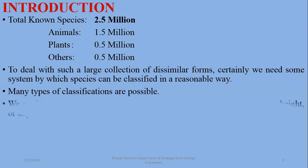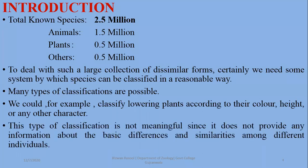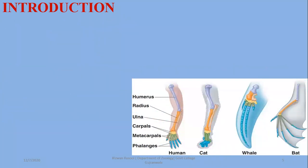Different types of classification exist. For example, you could classify plants according to their color, height, or any other character, but that doesn't seem meaningful and doesn't deliver proper information. So organisms should be classified on the basis of proper, meaningful characters.